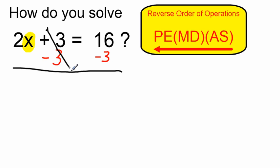On the left hand side, plus 3 and a minus 3 cancel out, leaving me with the 2x. And 16 minus 3 is equal to 13.